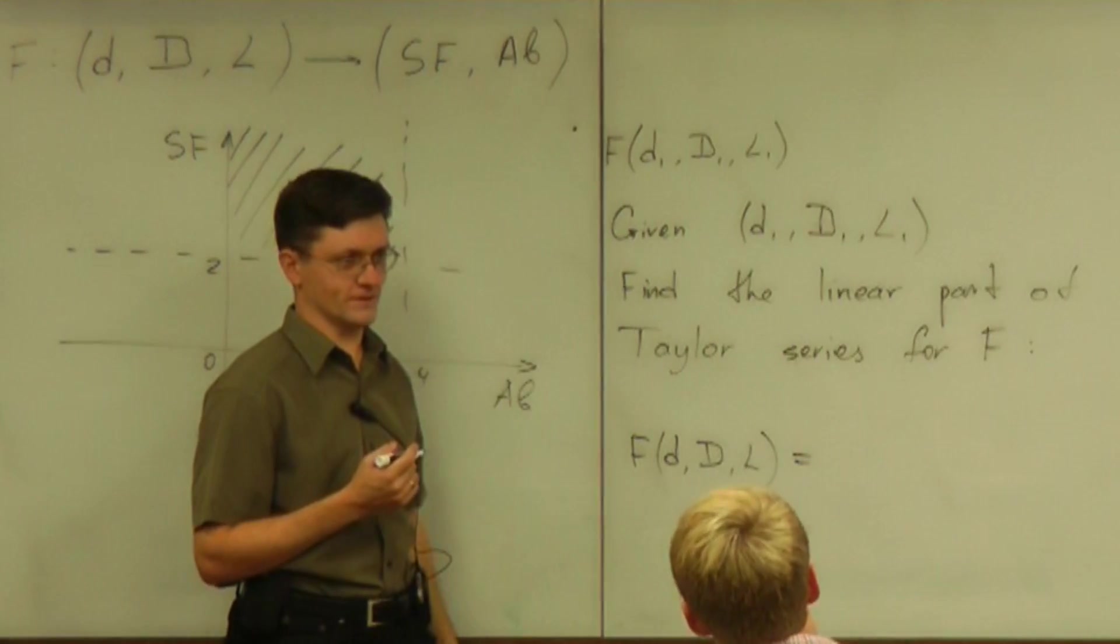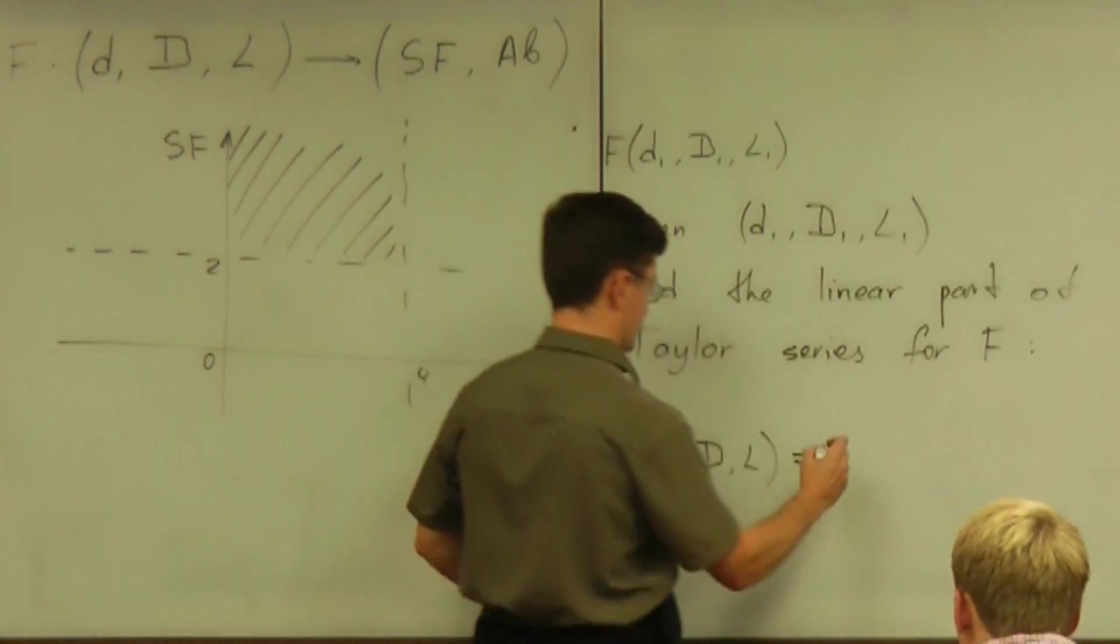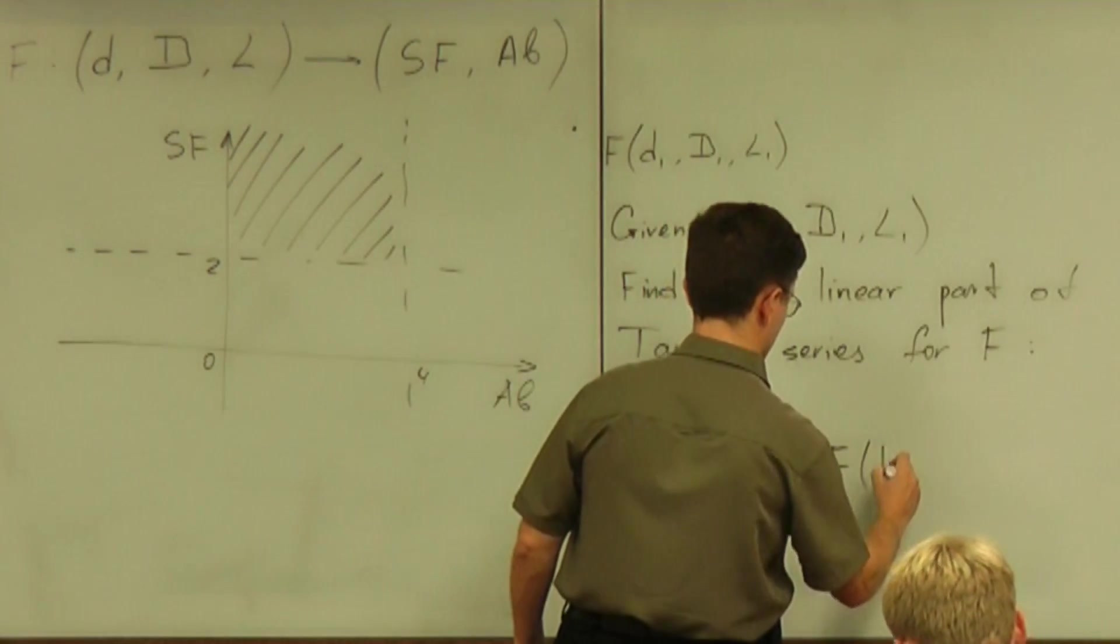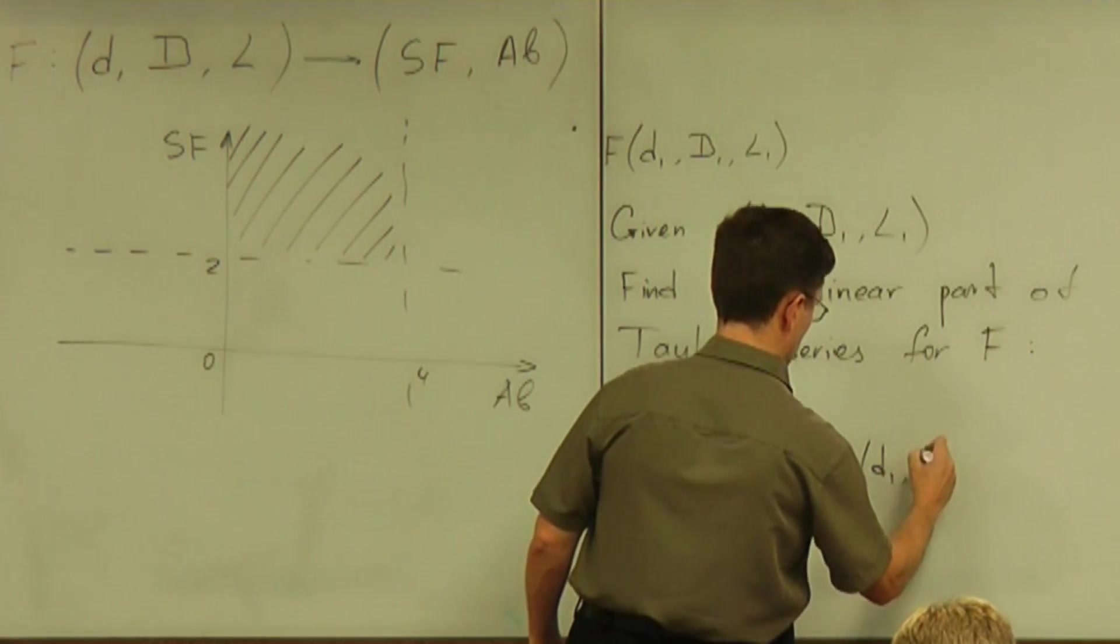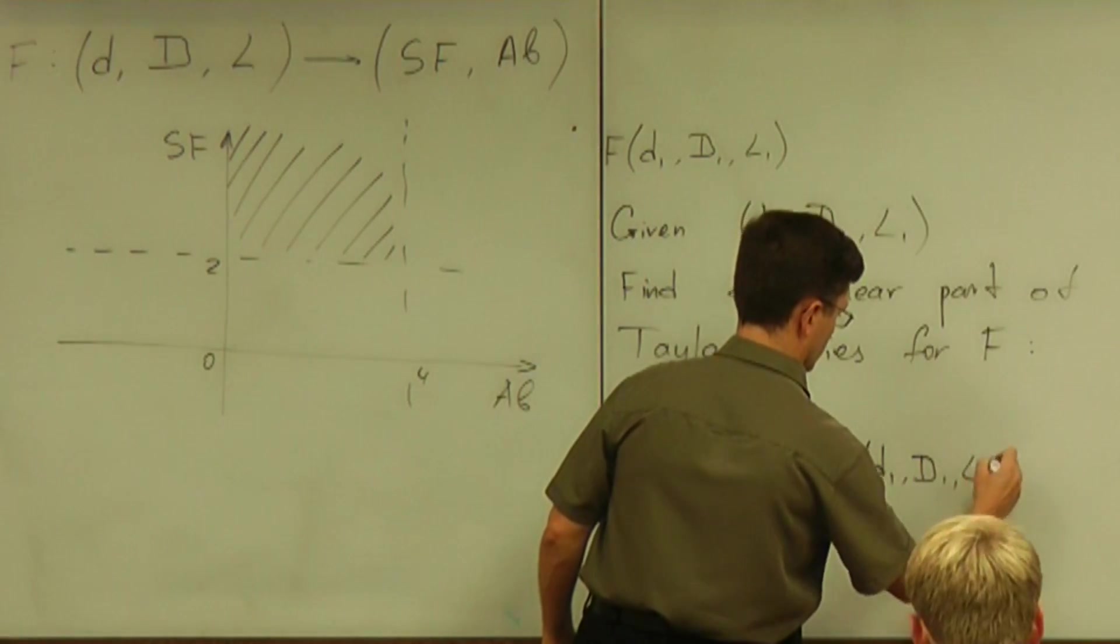What's the first term of Taylor series? The constant term. So it is F of D1, capital D1, L1.